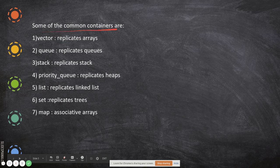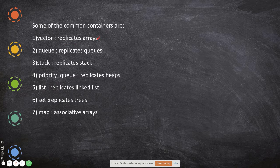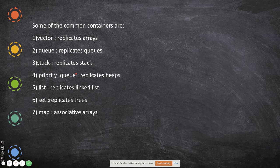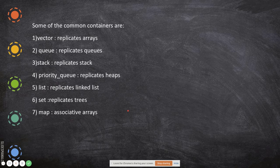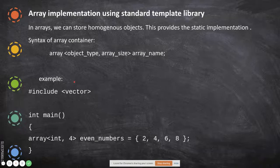Some of the common containers available in C++: vector, which is similar to arrays; array; queue, which replicates queues; stack, which replicates stack; priority queue, which replicates heap structures; list, which replicates linked lists; and set, which replicates trees.